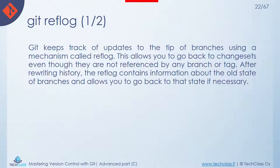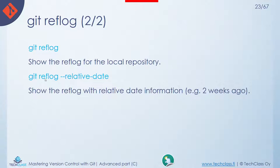Now let's get familiar with git reflog. What it does is keep the oldest state of branches and give you the ability to get back to those states, taking advantage of the reflog mechanism in Git. The command git reflog shows you the reflog for the local repository, and git reflog --relative-date shows a reflog with relative date information.